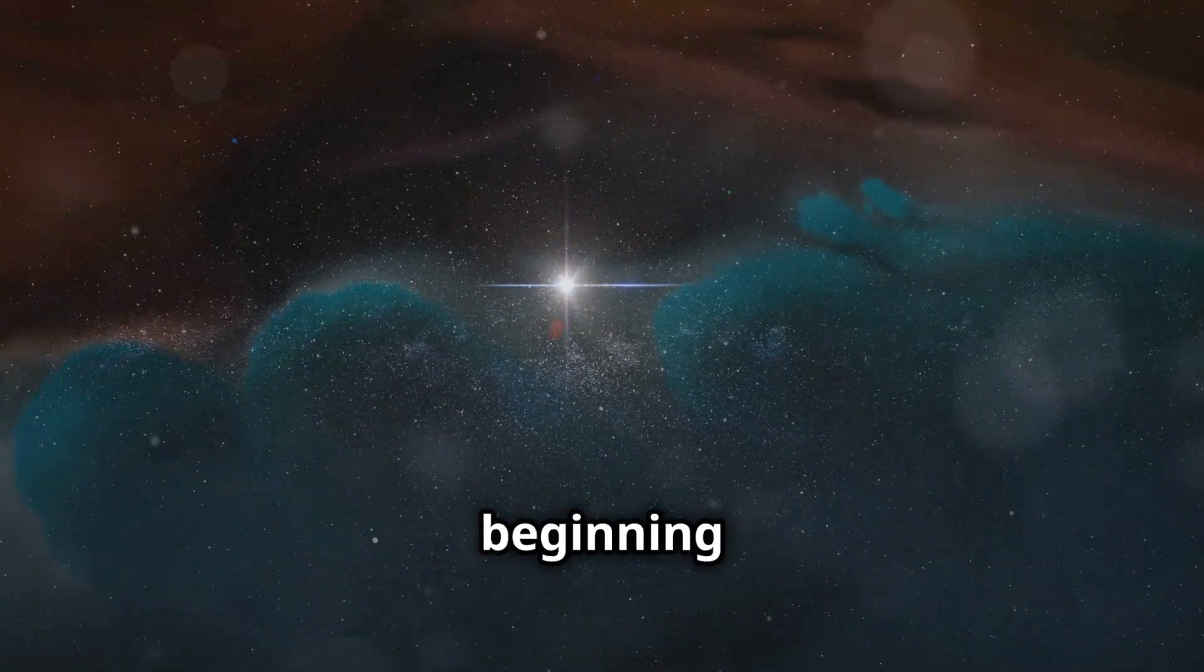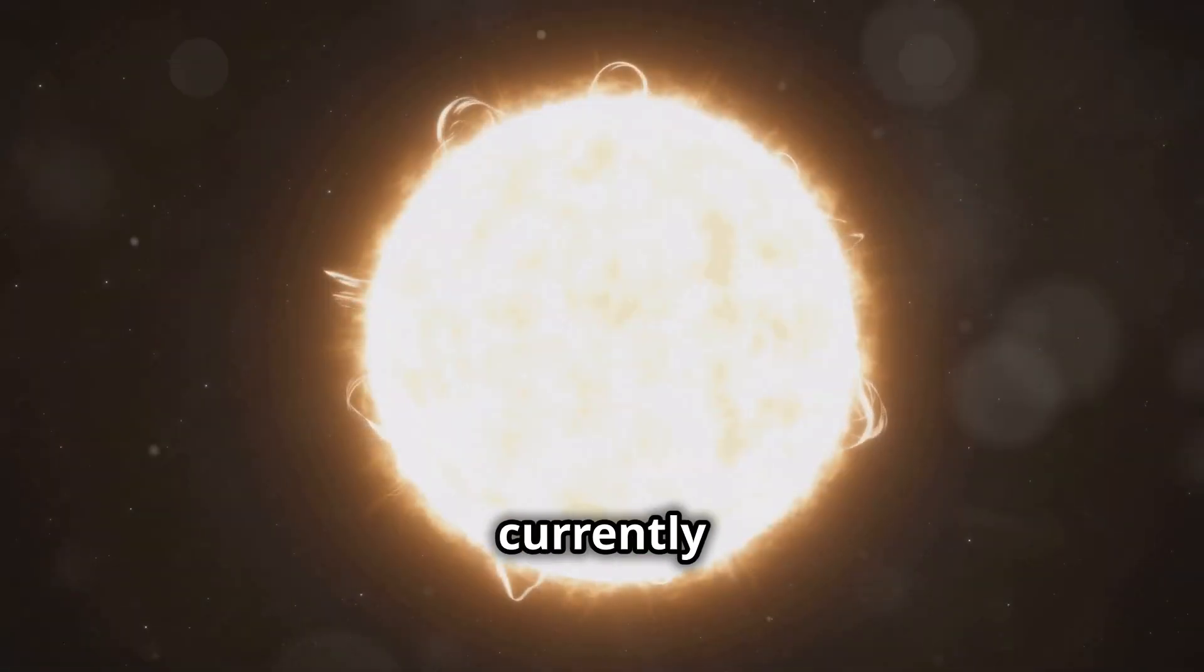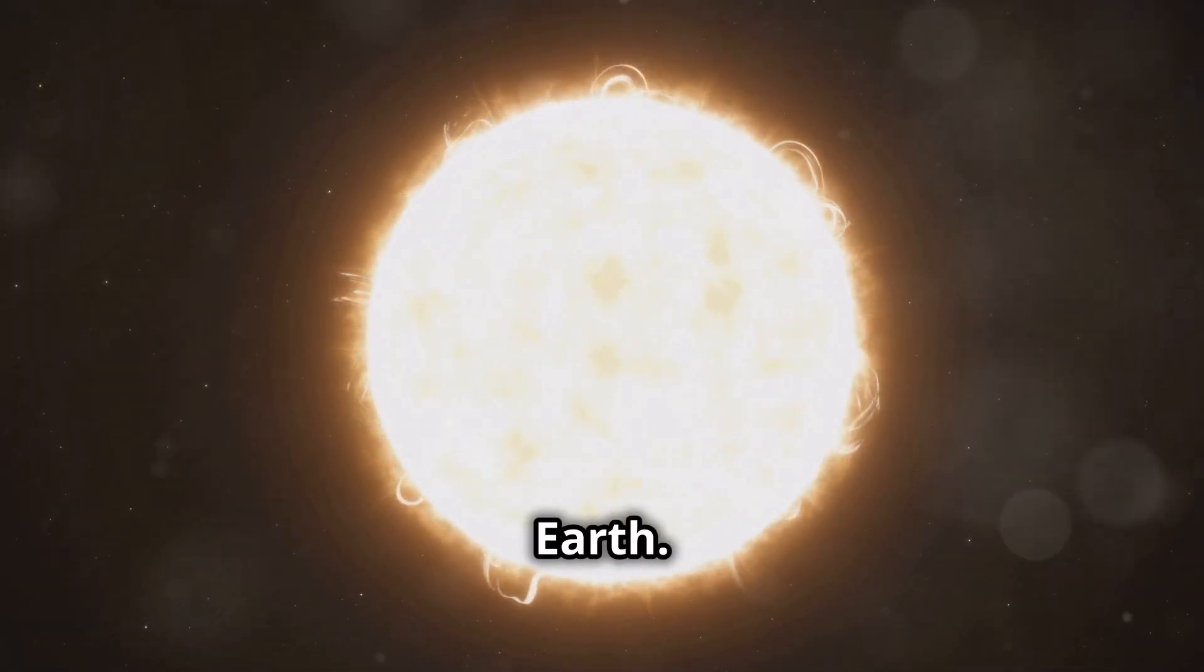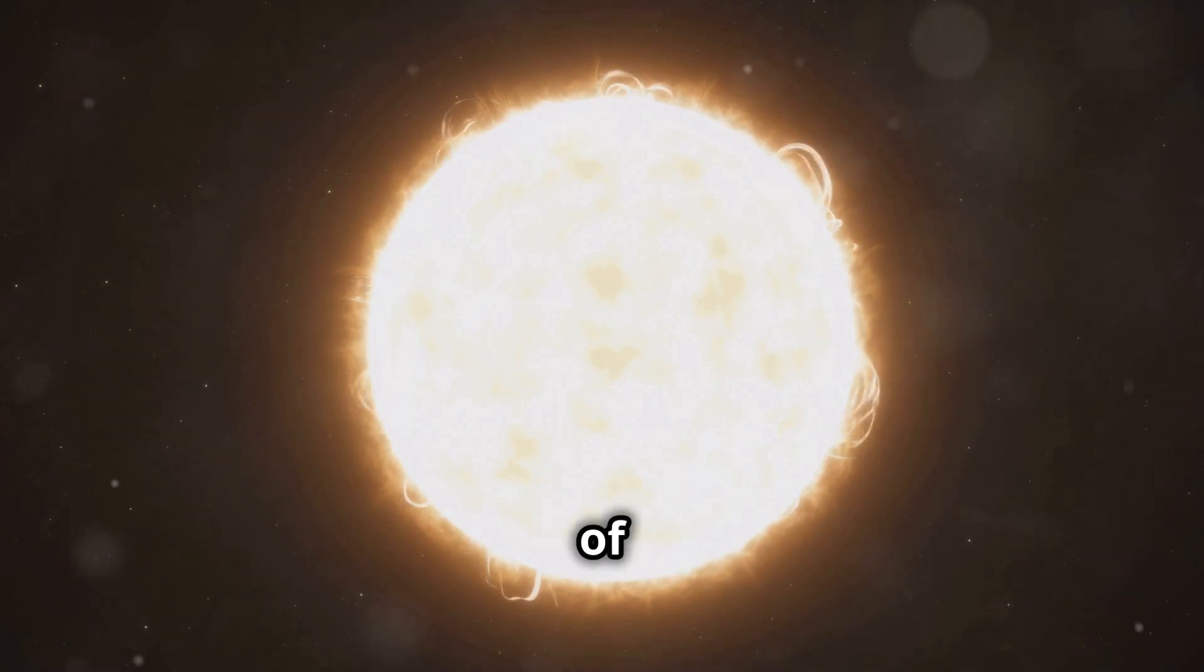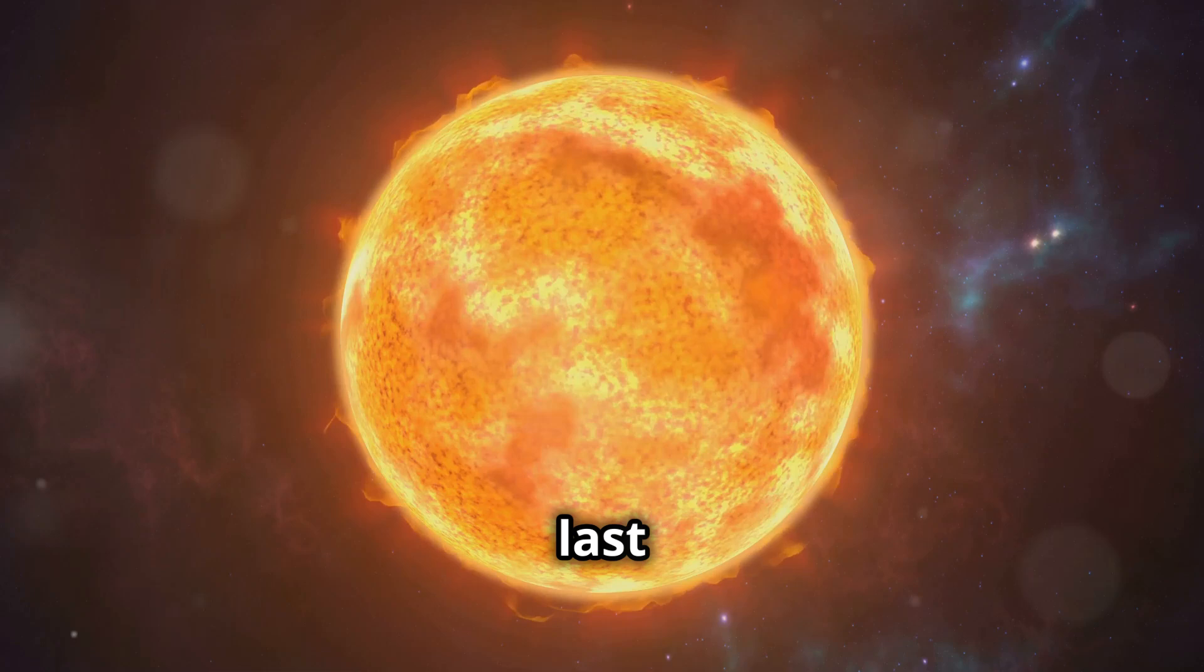This ignition marks the beginning of a star's long and stable period of life. Our sun is currently in this stable phase, shining brightly and providing the energy necessary for life on Earth. This phase can last for billions of years, during which the star remains relatively unchanged. However, this phase won't last forever.